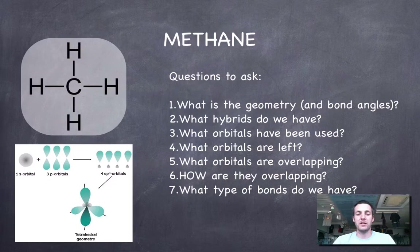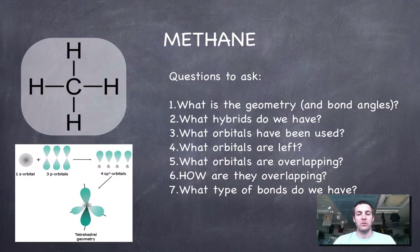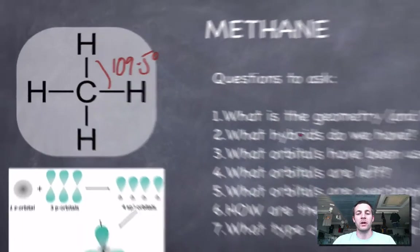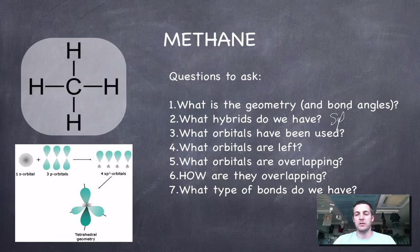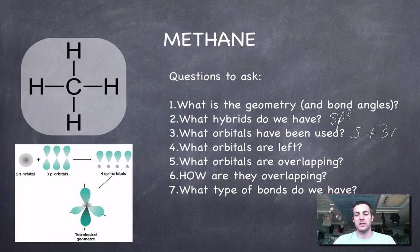Let's have a look at methane. For all examples I've given us a list of questions to ask: what is the geometry, what hybrids do we have, what orbitals have been used, what orbitals are left, and what orbitals are overlapping? The geometry in methane is 109.5 degrees, therefore it's tetrahedral, and therefore we must have sp3 hybrids. If we've got sp3 hybrids, carbon has mixed one s with three p orbitals.